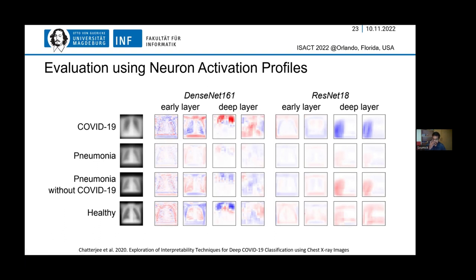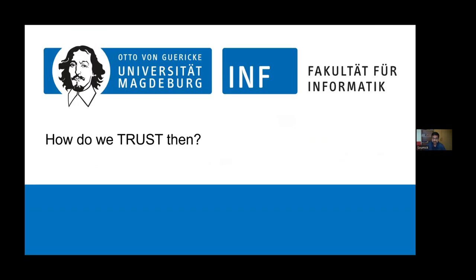The message here is that if we just compare models using metrics like accuracy or dice score, that's not the whole story. We cannot evaluate a model based solely on classification, segmentation, or reconstruction performance. We really need to dig deep to actually build trust.